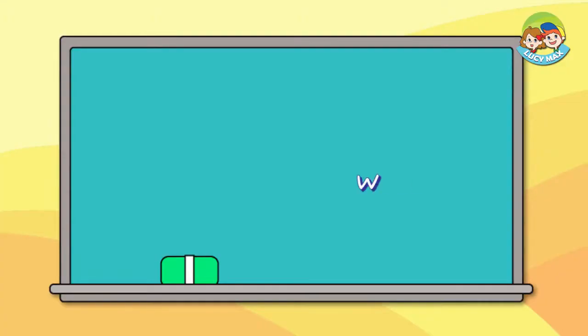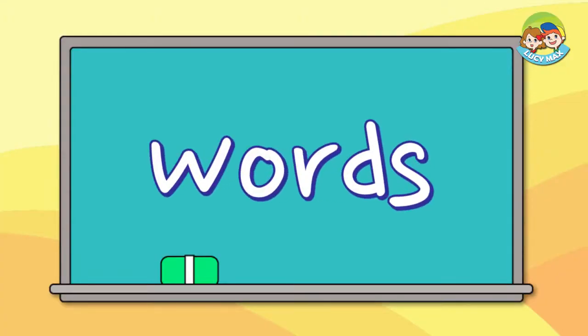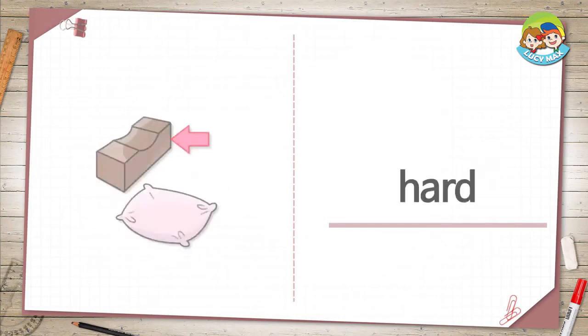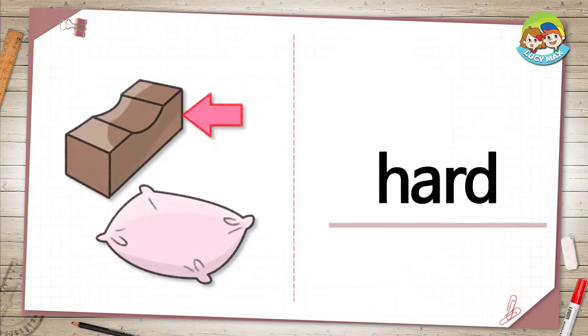First, let's learn some words using pictures, then you will take a test. The first word is hard. In the picture, an arrow is pointing to a brick. The brick is hard. The pillow is soft. What other thing is hard?